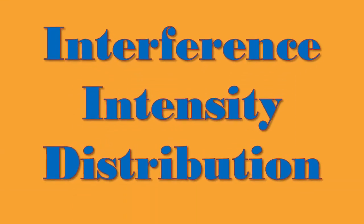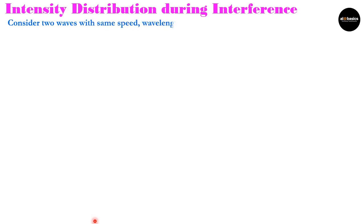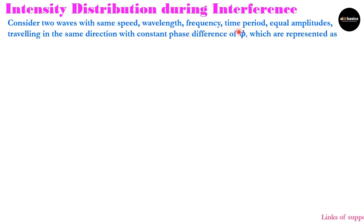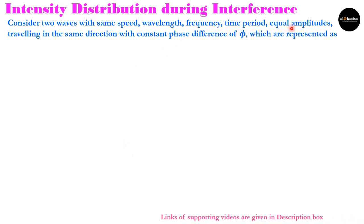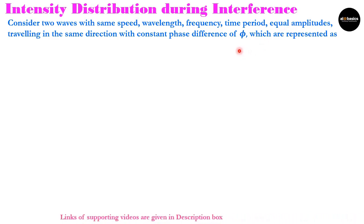In today's video, we will discuss how intensity is distributed in interference pattern. Let us start with two waves which are having same speed, same wavelength, same frequency, same time period and with equal amplitudes. They are traveling in the same direction with constant phase difference phi.